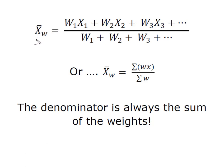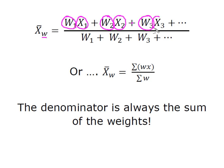So what we have is we're going to calculate x-bar sub w, and sub w just indicates that we calculated it as a weighted mean. We're going to take the weight, or the number of times that x1 appears, and multiply it times its value. To that we're going to add the number of times that x2 appears times the value of x2, and add the number of times that x3 appears times the value of x3. We would just keep doing that until we had accounted for everything.